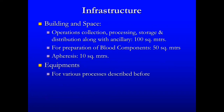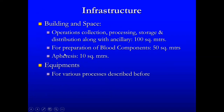There should be adequate infrastructure for the functioning of a blood bank. This includes building, space, and equipment. Rooms should be air-conditioned. For operations including collection, processing, storage, and distribution along with ancillary areas, a requirement of 100 square meters is needed. For component preparation, 50 square meters is required; for apheresis procedures, 10 square meters is required. Various equipment for all described processes is also required.